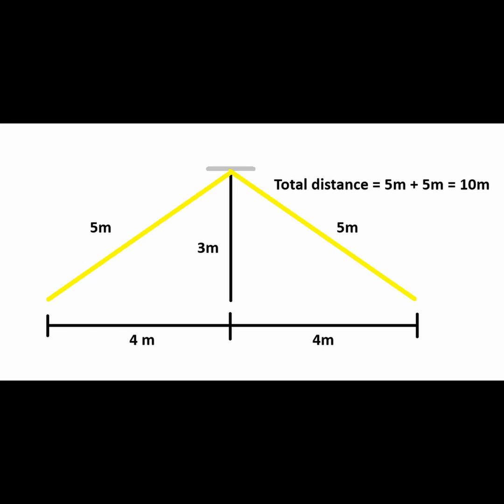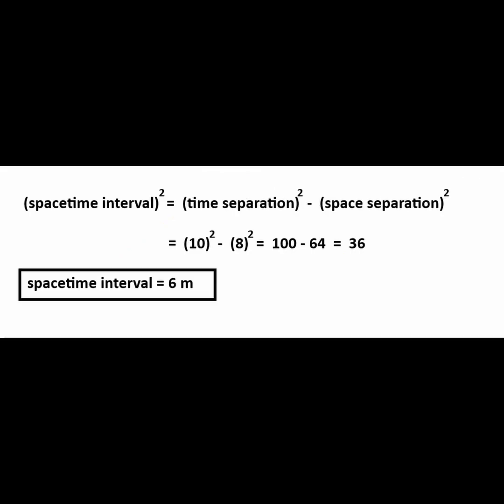Since light travels at 1 meter per meter of time, it takes a total of 10 meters of time to traverse the total path length. The spacetime interval squared is equal to 10 squared minus 8 squared, which is equal to a total of 36.